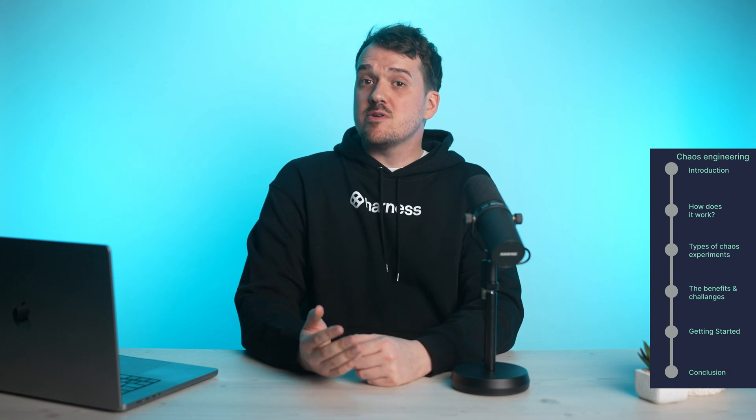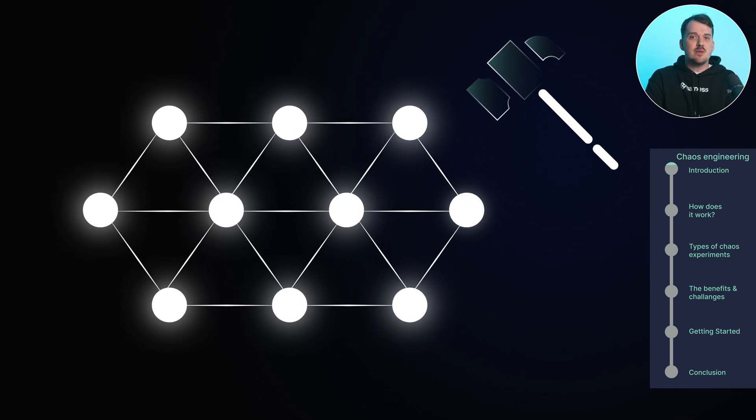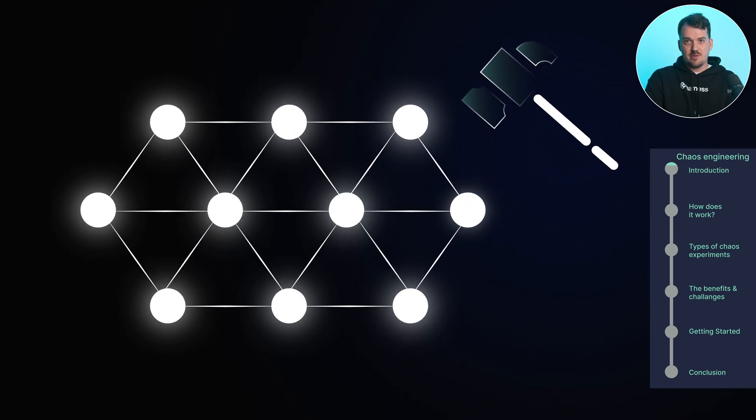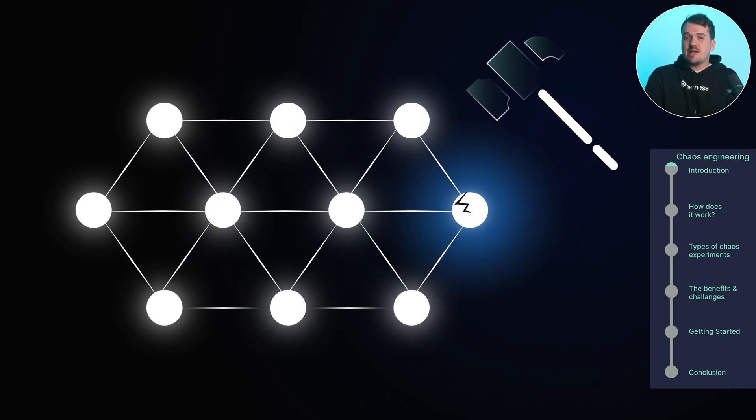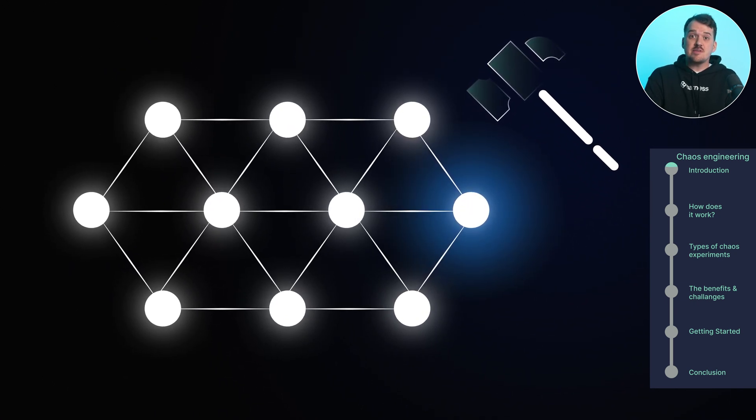Have you ever wondered what happens when your system encounters the unexpected? What if you could test and prepare for those moments of chaos before they happen? Chaos engineering is about proactively stress testing your system to find weaknesses before they become real problems. Imagine intentionally breaking parts of your system to see how well it can handle failure. That's the essence of chaos engineering.